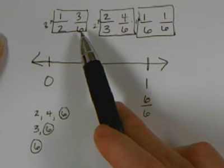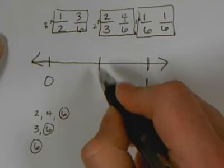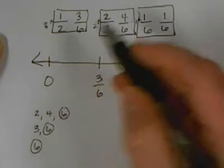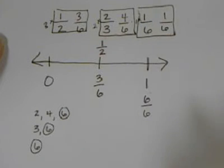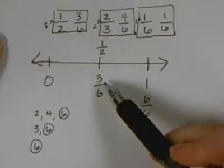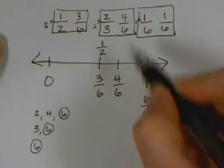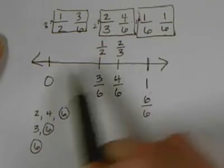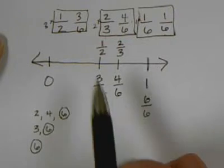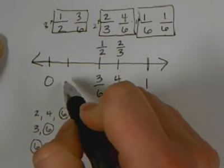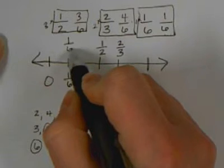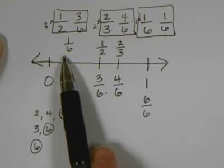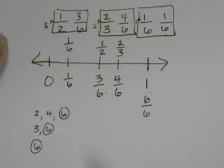For 3/6, we know that 3 is half of 6, so it should come somewhere in the middle — 3/6. On top, we're going to write our old fraction: 1/2. Now for 4/6, it's going to come after 3/6, so we write it at the bottom and put our old fraction at the top: 2/3. Now for 1/6, it's going to come closer to 0 but before 3/6, so we put it here on our number line — 1/6 — and put the old fraction at the top. So now we have our new fractions at the bottom and our original fractions at the top, and we can tell where they should all fall on the number line.